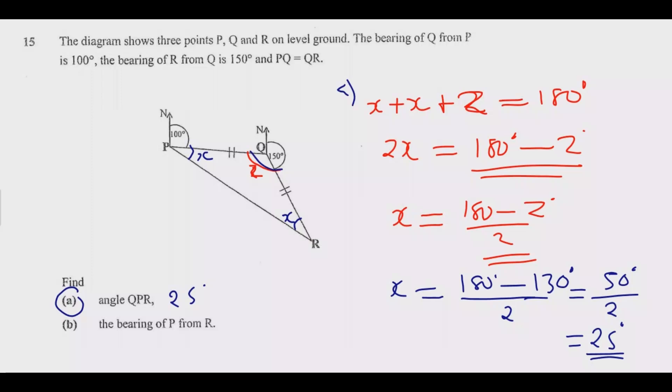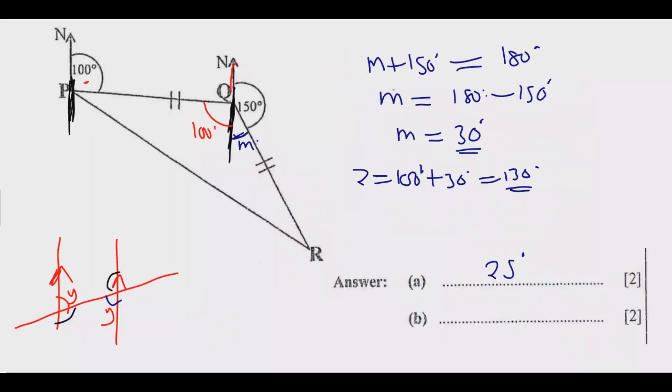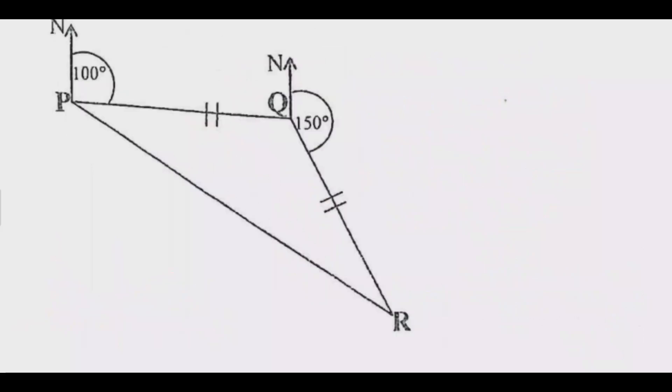Now for the bearing of P from R. Remember X is 25 degrees. For the bearing of P from R, you stand at R - always for 'A from B' you stand at B - then measure clockwise direction to find the bearing.